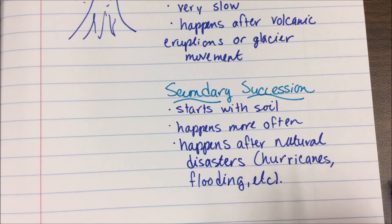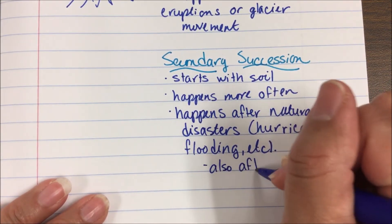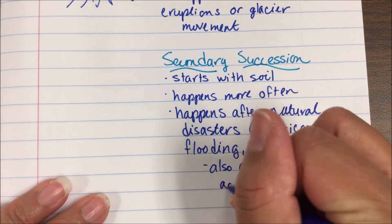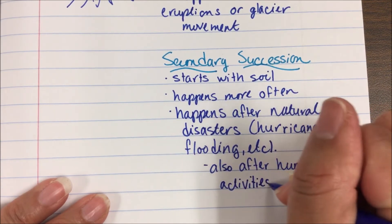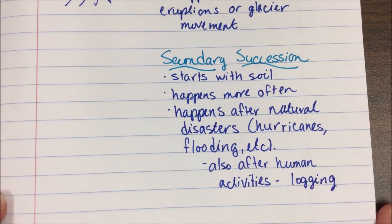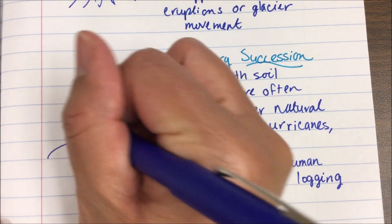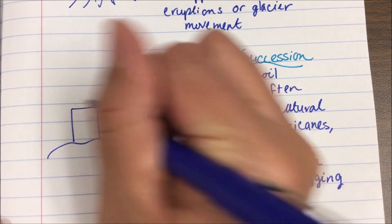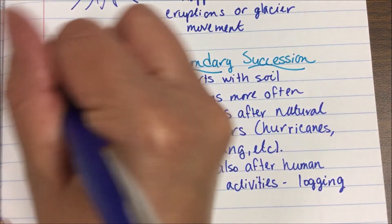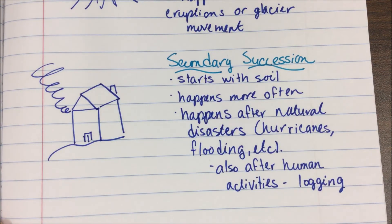Secondary succession also happens after human activities — for example, logging. Basically anything that is going to leave soil there. Things like tornadoes would be an example — here's a little house with a chimney and a big tornado coming through.